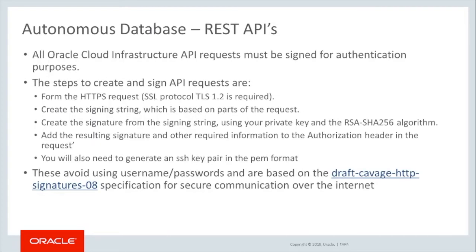All Oracle Cloud Infrastructure API requests must be signed for authentication purposes. Oracle Cloud Infrastructure APIs avoid using username passwords and are based on the Draft Coverage HTTP Signature 08 specification for secure communication over the internet. The steps to create and sign API requests are: form the HTTPS request (SSL protocol TLS 1.2 is required), then create the signing string based on parts of the request, followed by creating the signature from the signing string using the private key and the RSA SHA-256 algorithm. Add the request signature and other required information to the authorization header.